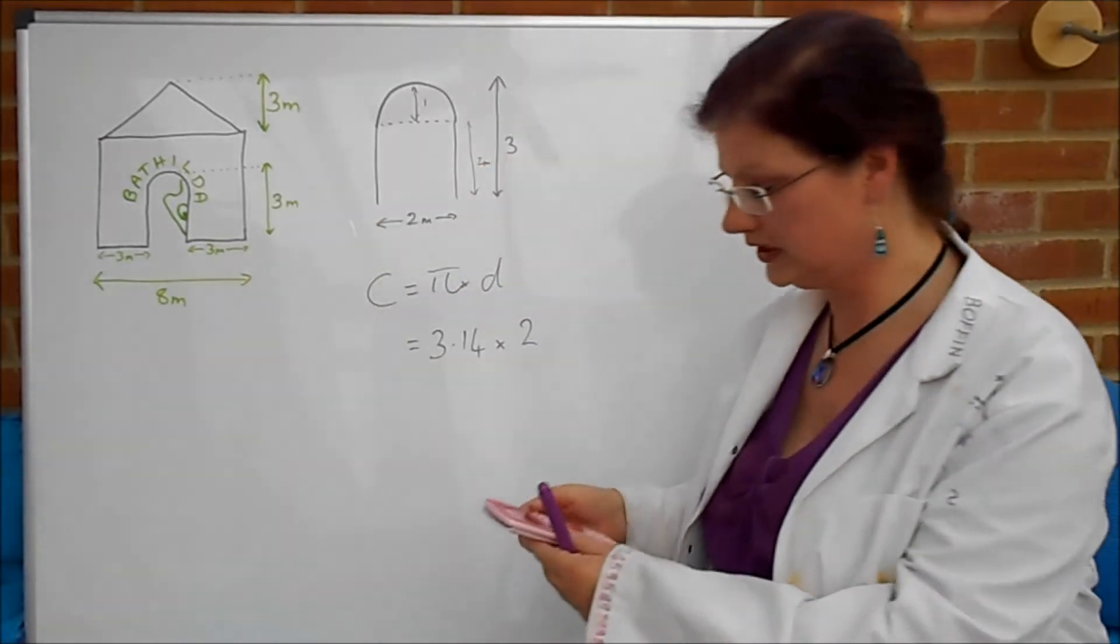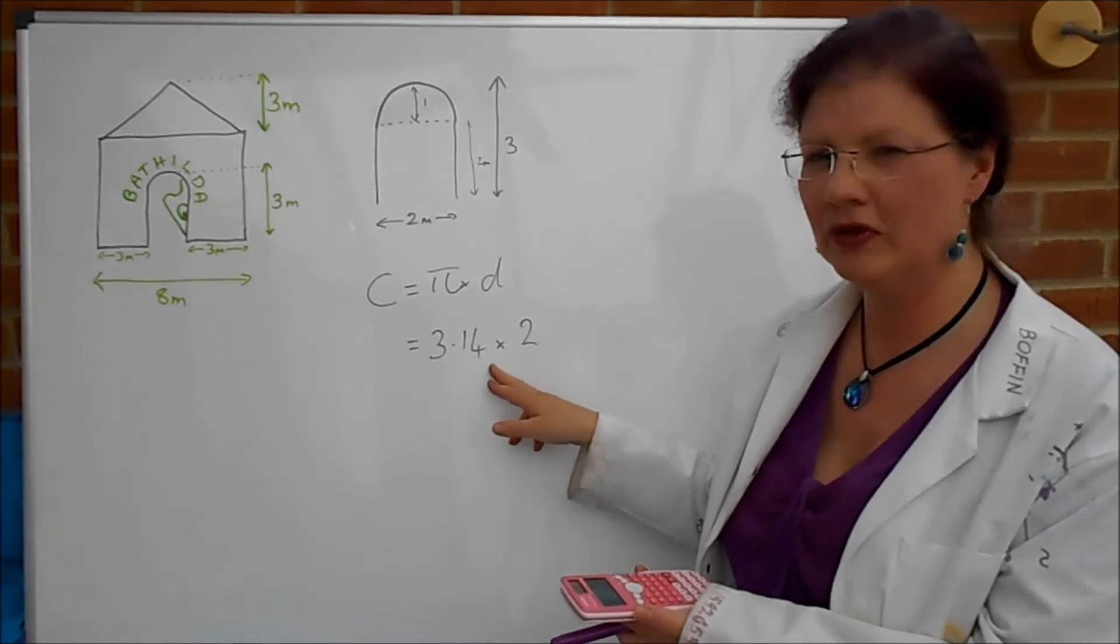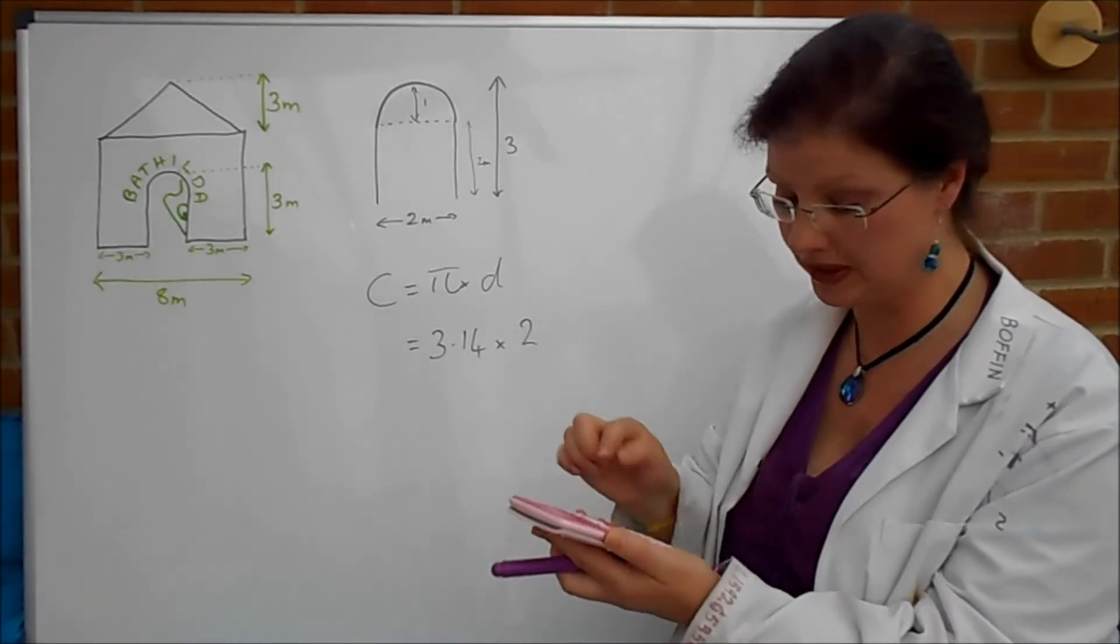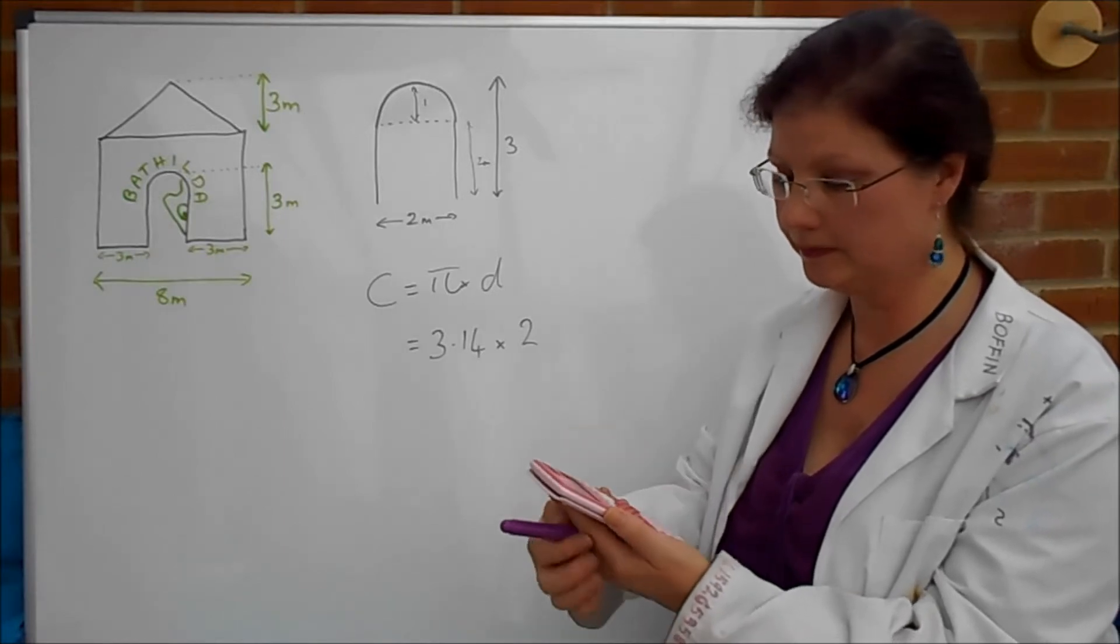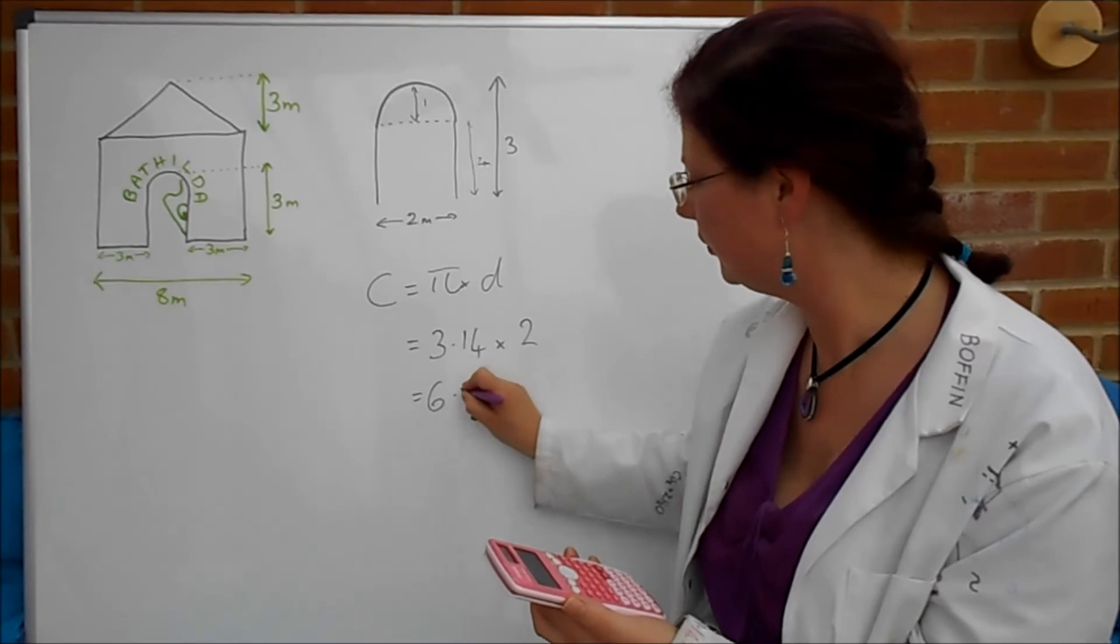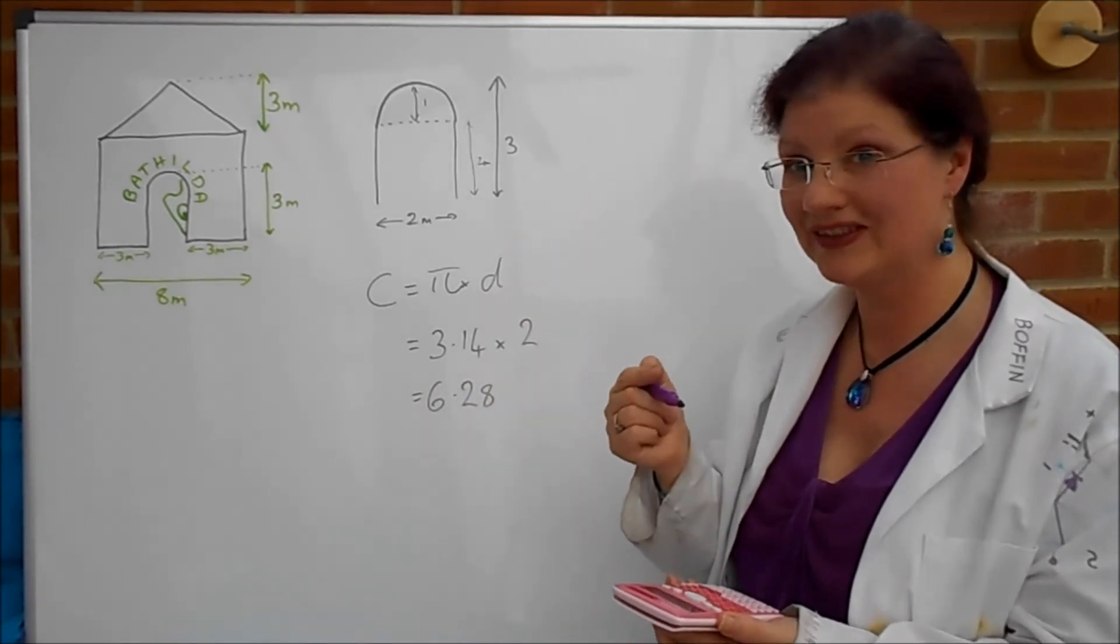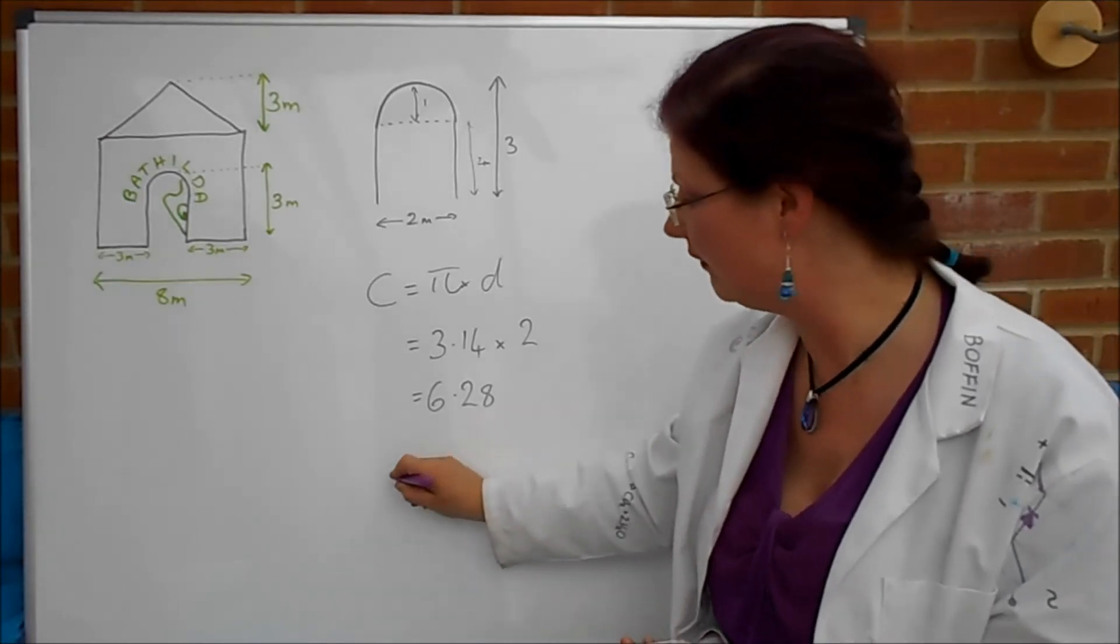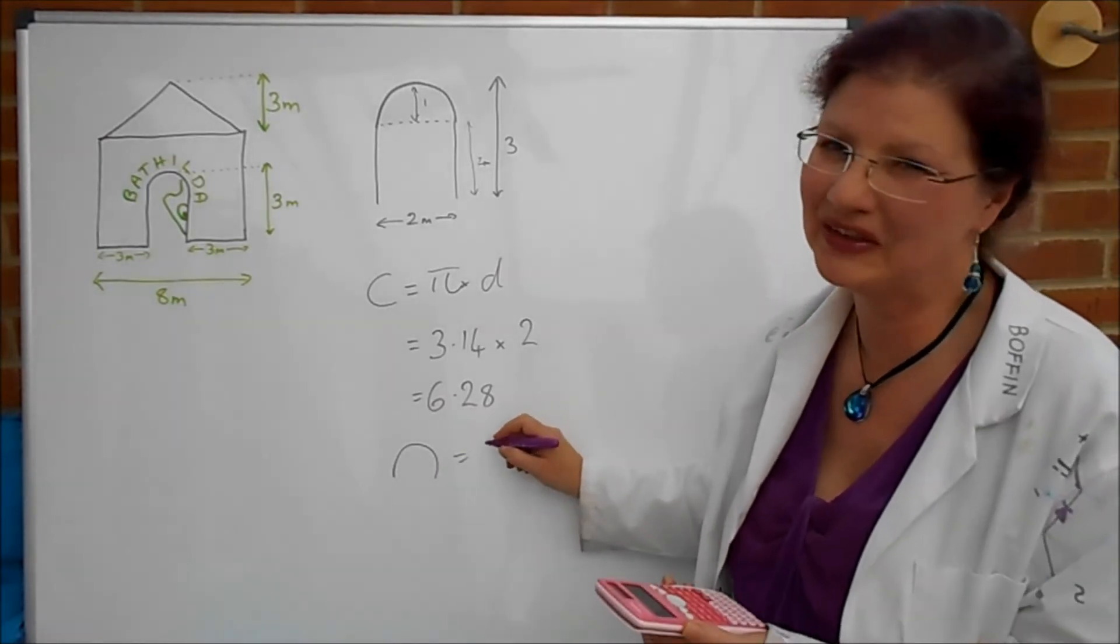At this point in time you probably want to get out your calculator. I'm going to use the pi button pi times two and that gives me 6.28. That is all the way round the circle. We don't want all of that. We only want half of that so the arch equals half of that which actually is back to 3.14 again.